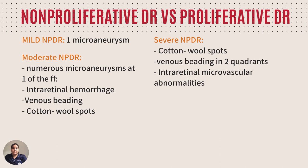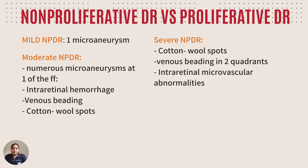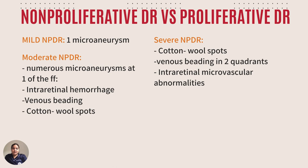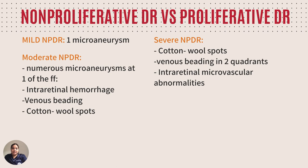Diabetic retinopathy is classified into non-proliferative and proliferative forms. For mild non-proliferative diabetic retinopathy, there is one microaneurysm. Moderate non-proliferative diabetic retinopathy has numerous microaneurysms and one of the following: intraretinal hemorrhage, venous beading, or cotton wool spots. For severe non-proliferative diabetic retinopathy, there are cotton wool spots, venous beading in two quadrants, and intraretinal microvascular abnormalities.